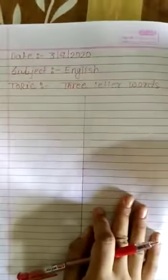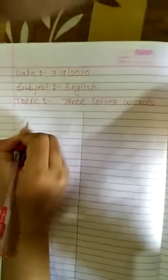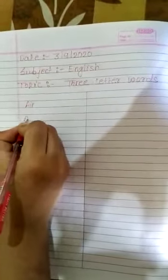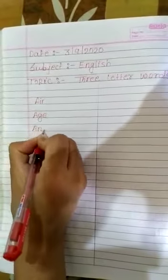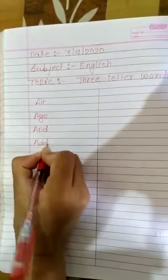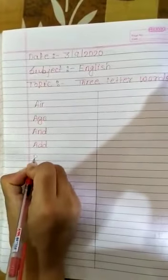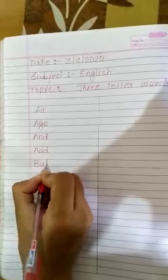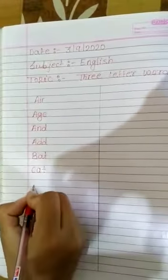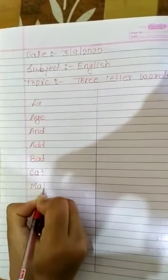So, first word is air. A-I-R. Next word is age. A-G-E. Age. And. A-N-D. And. Add. A-D-D. Add. Bat. B-A-T. Cat. C-A-T. Cat. Mat. M-A-T. Mat.